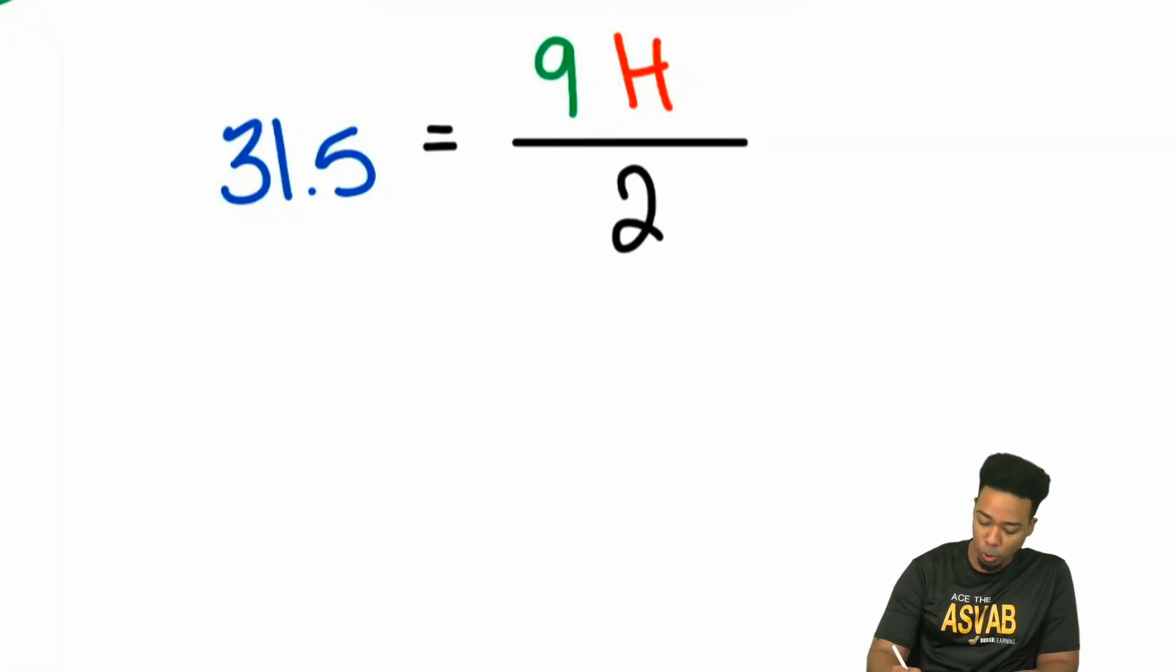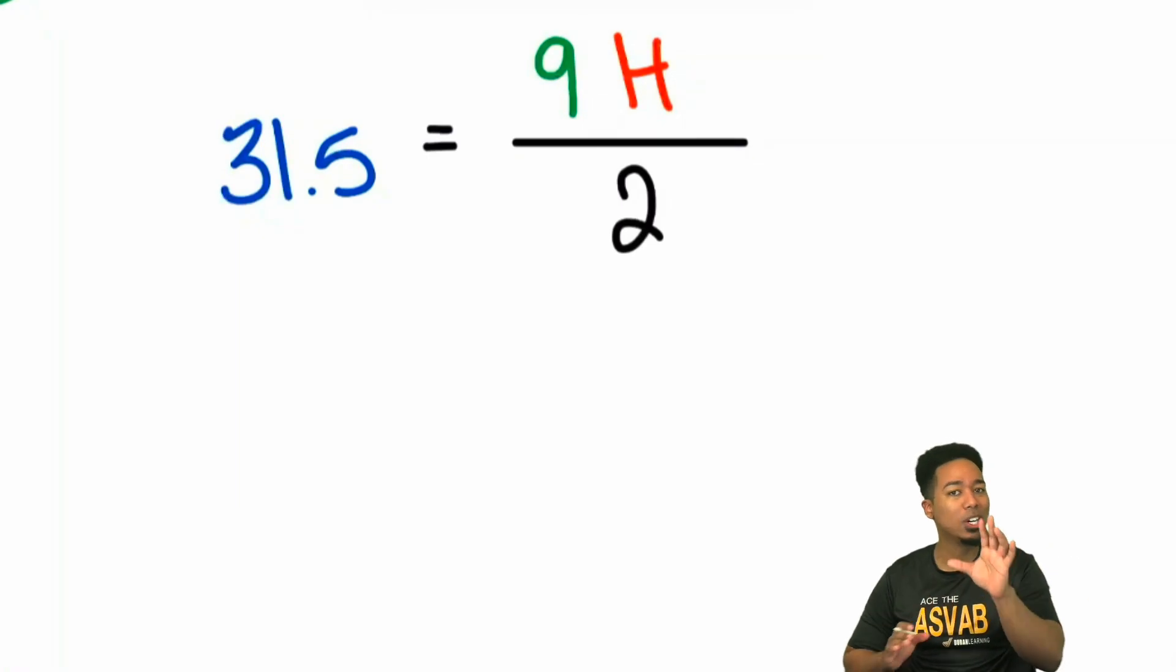We know that we're trying to get the H by itself. To get it by itself, we see that we're multiplying by nine and dividing by two. So let's get rid of each one at a time. If you'd like to, you can get rid of them both at the same time, but we'll go ahead and do one at a time.